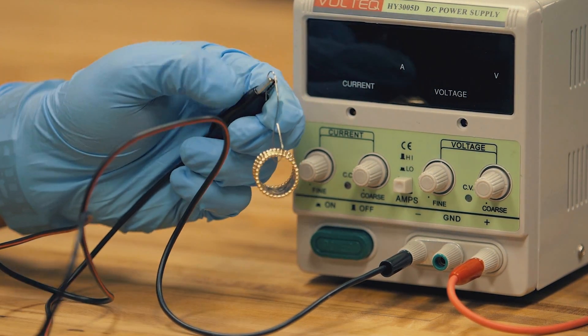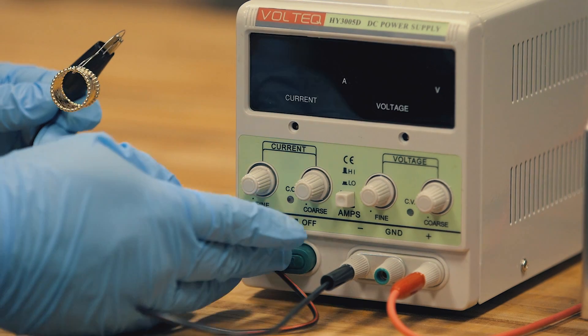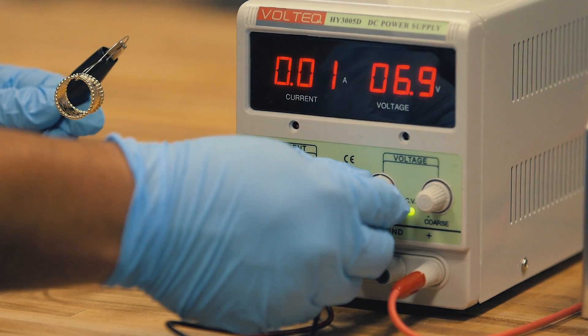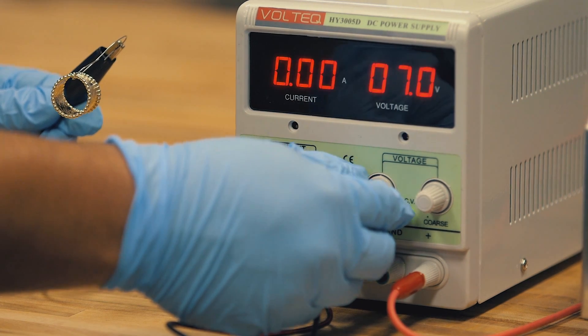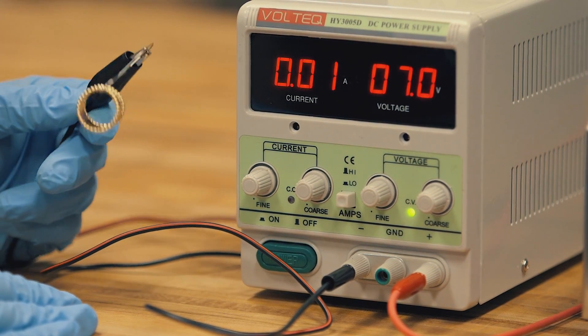Our 5 amp rectifier will plate up to 72 square inches. I'm going to set our rectifier for 7 volts. That's the recommended voltage for this particular electro cleaner, but others will be different. We're going to electro clean for 30 seconds to 1 minute.